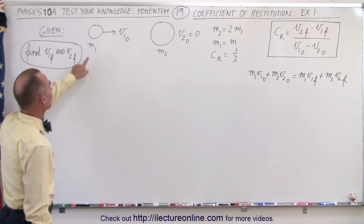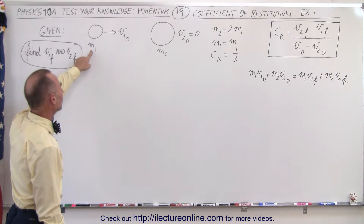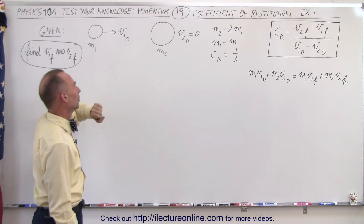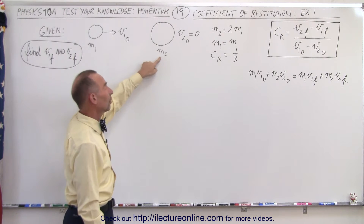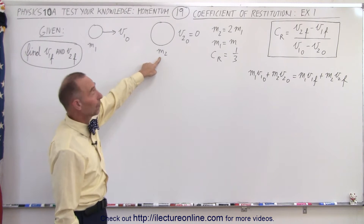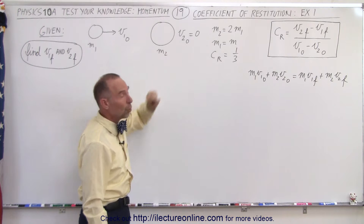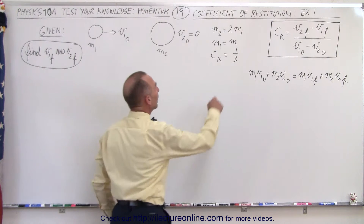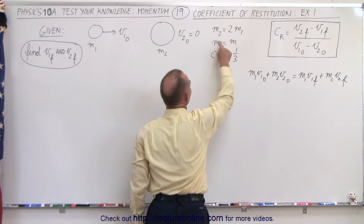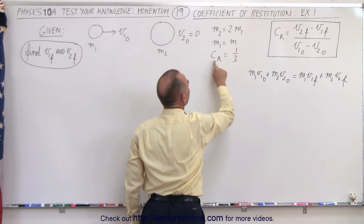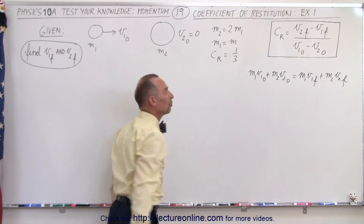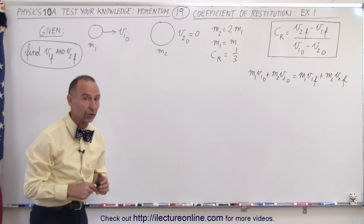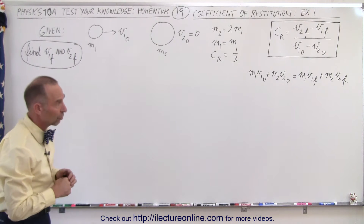Let's say that we have a small object with mass m1, moving at velocity v1 initial, hitting a second object with mass m2 that has no initial velocity. We're also told that m2 is twice the size of m1. Let's call m1 equal to m, and the coefficient of restitution is equal to one-third.